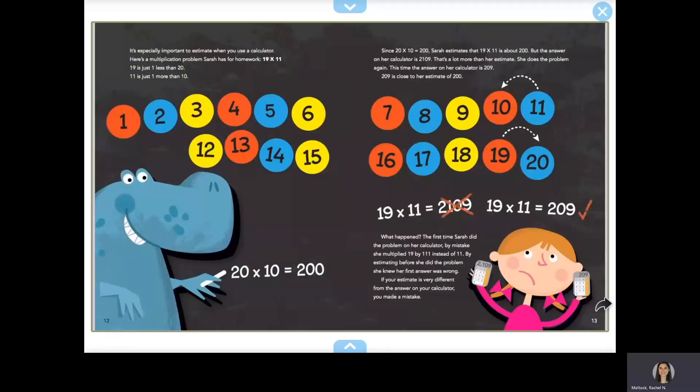It's especially important to estimate when you use a calculator. Here's a multiplication problem Sarah has for homework: 19 times 11. 19 is just one less than 20. 11 is just one more than 10. Since 20 times 10 equals 200, Sarah estimates that 19 times 11 is about 200.